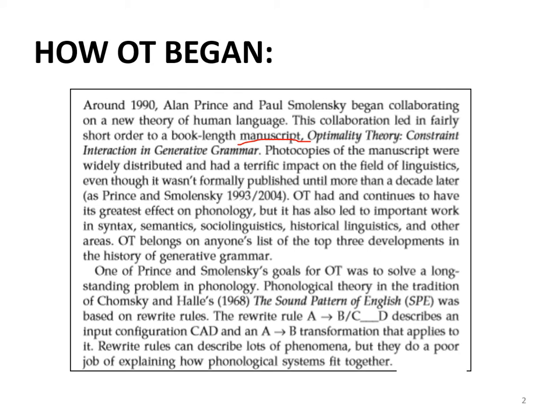The full title of their manuscript is: Optimality Theory: Constraint Interaction in Generative Grammar. You should remember this title. It is again very important. So they titled their manuscript as optimality theory — that is the name they devised for the theory they developed.